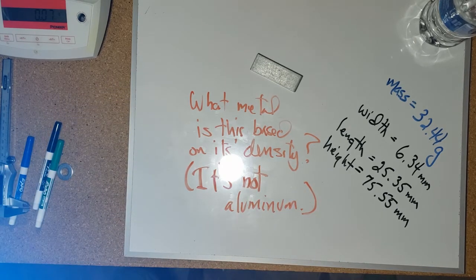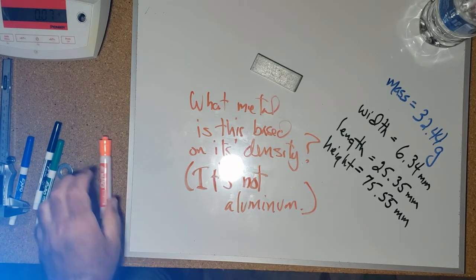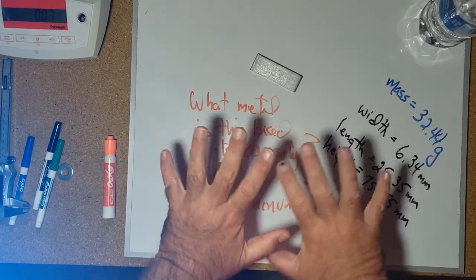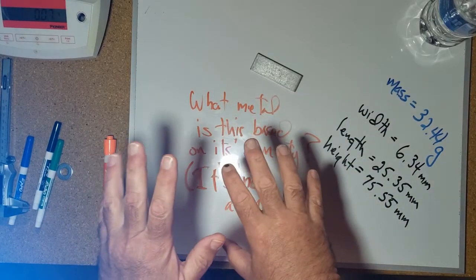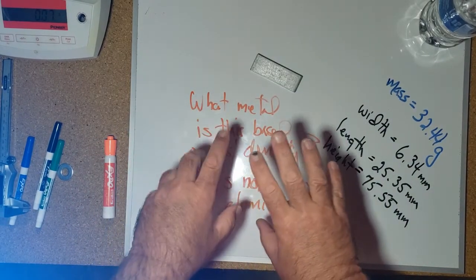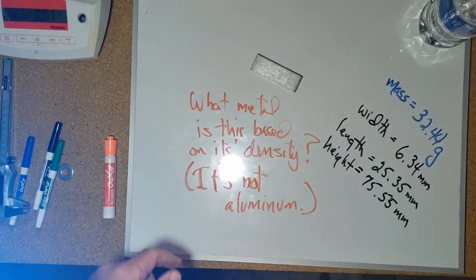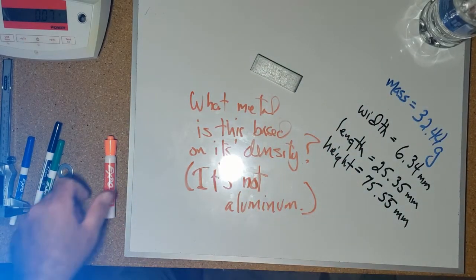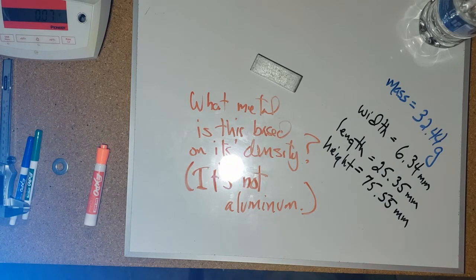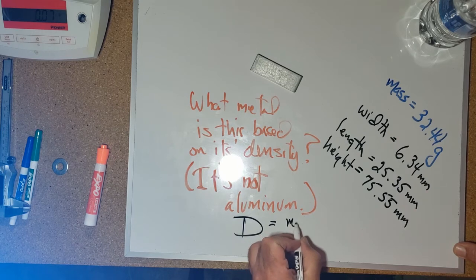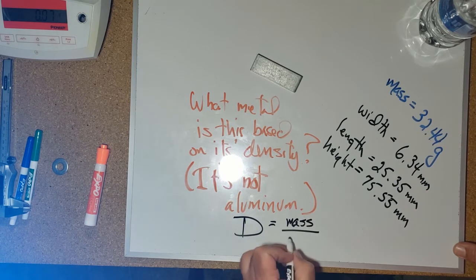Now, you are going to have to do a little bit of Googling around or looking around on the internet. Once you determine the density, just go into Google and type in what metal has a density of, whatever it is that you computed for the density. Remember, the density equation is density equals mass over volume.